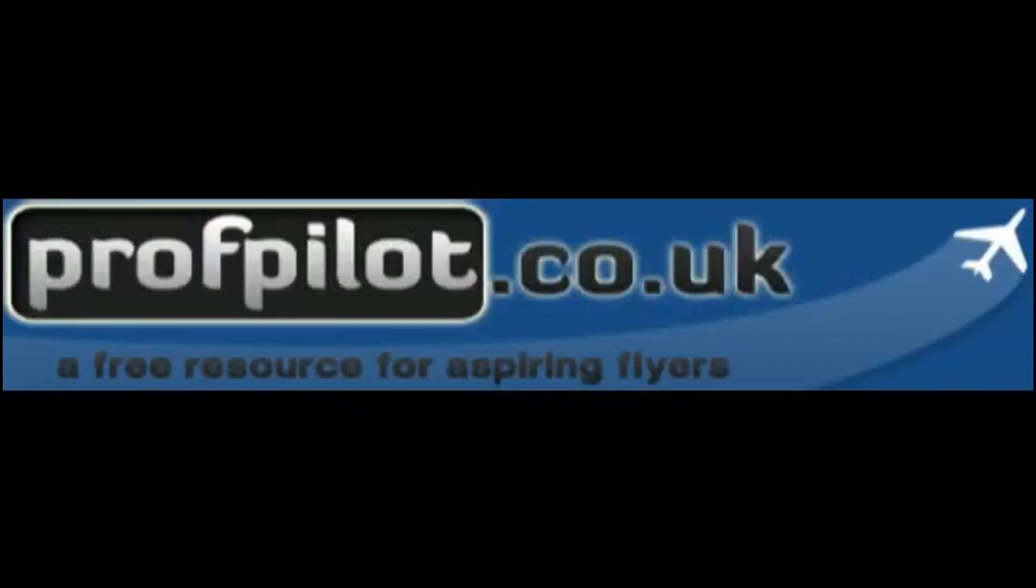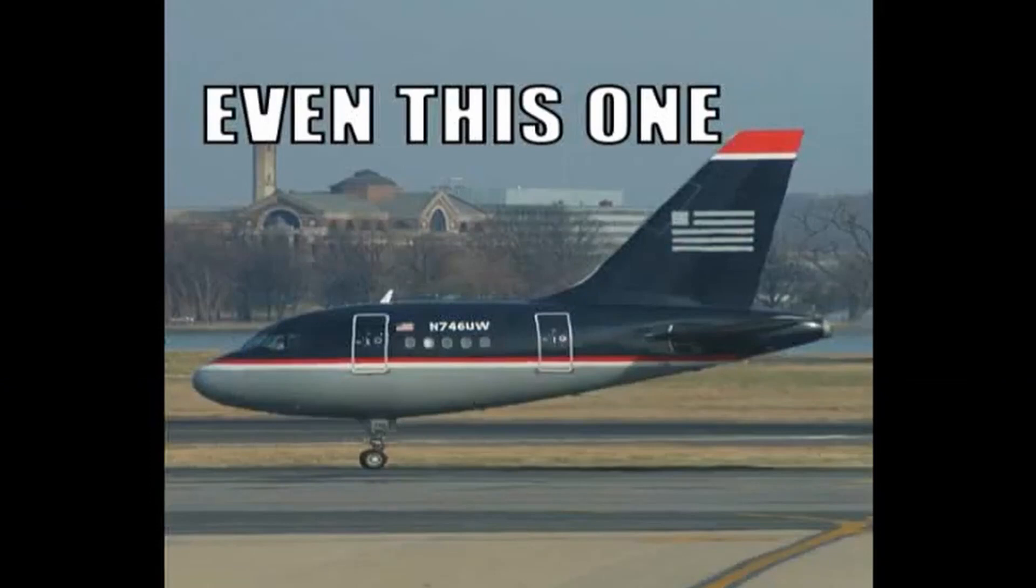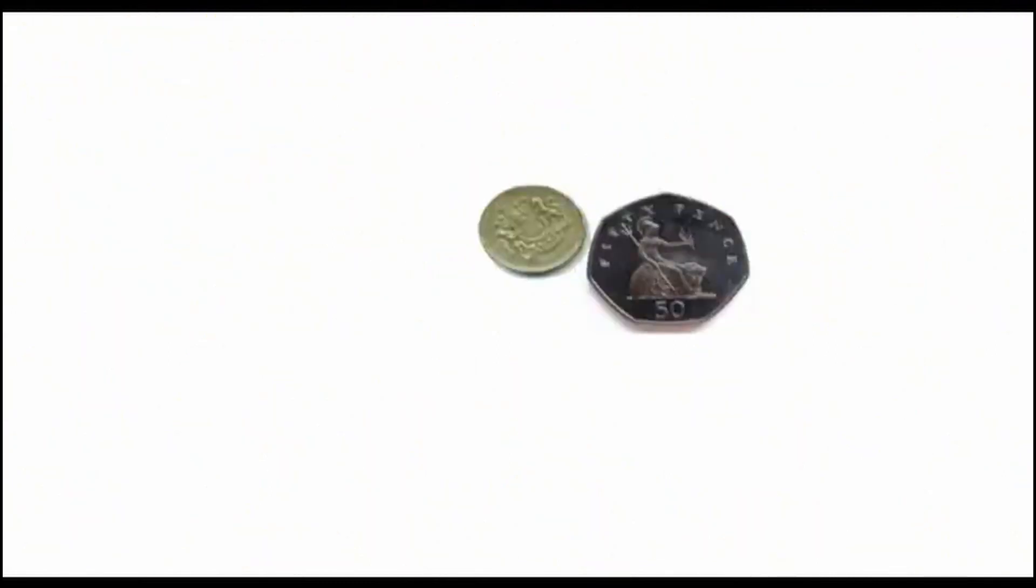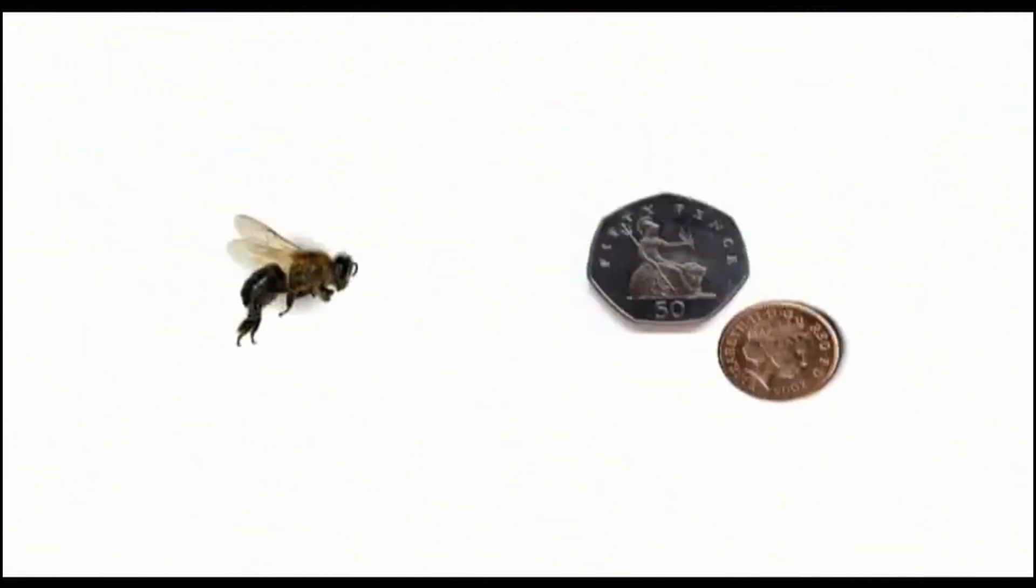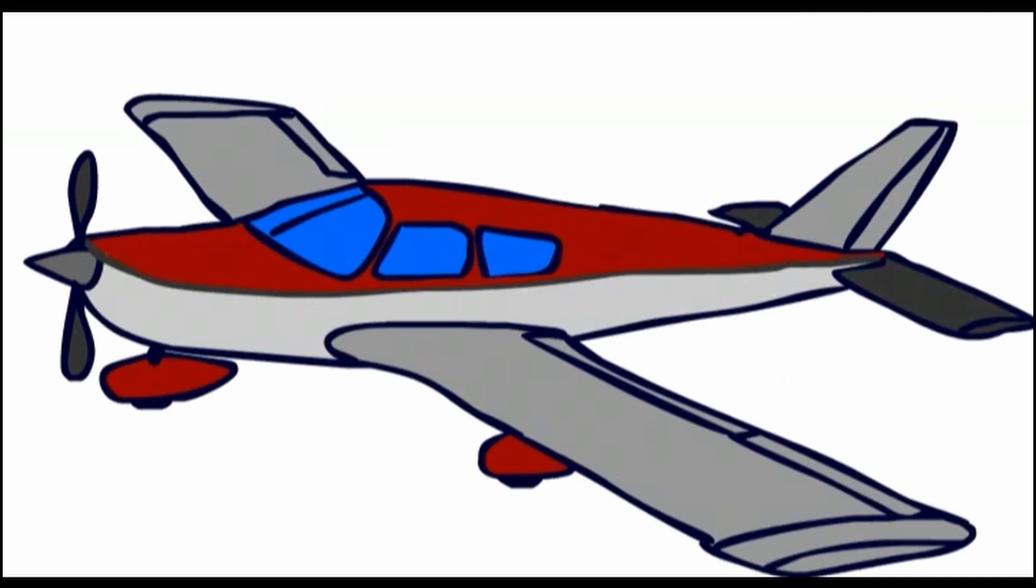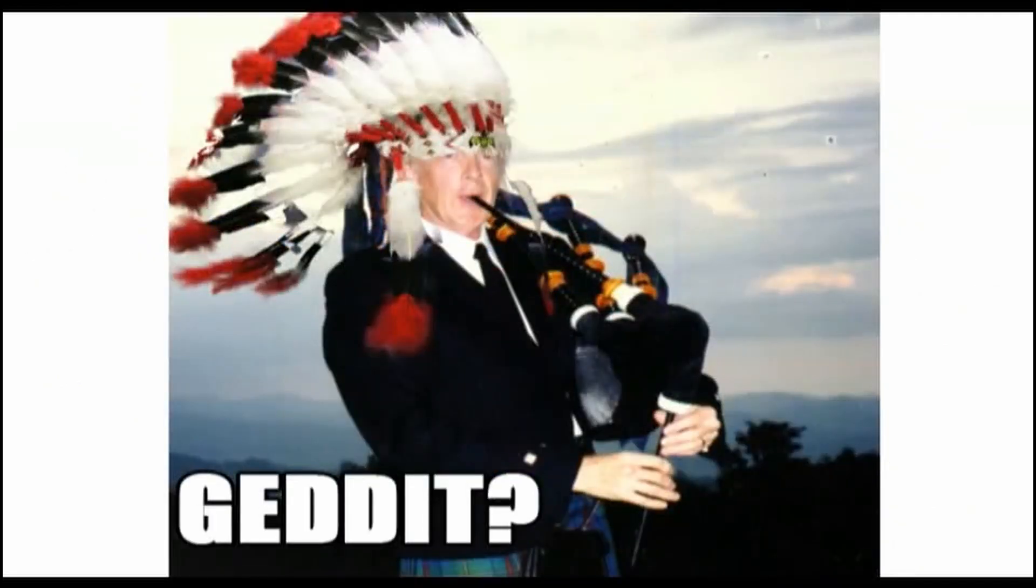This first video will be going over the basic features that exist on most aircraft, so this should be useful whether you are going to learn on one of those French Robin 200s, a Cessna 150, or even a B-52. The example aircraft I will mainly use in this video is a Piper Cherokee, just because I learned on this type, and it is quite a common training aircraft.